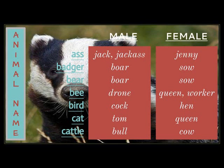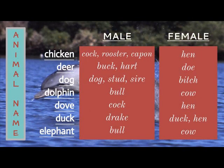Male cattle would be a bull, and female cattle would be a cow. A male chicken would be a cock, a rooster, or a capon — that is a castrated male chicken — and a female chicken is a hen.